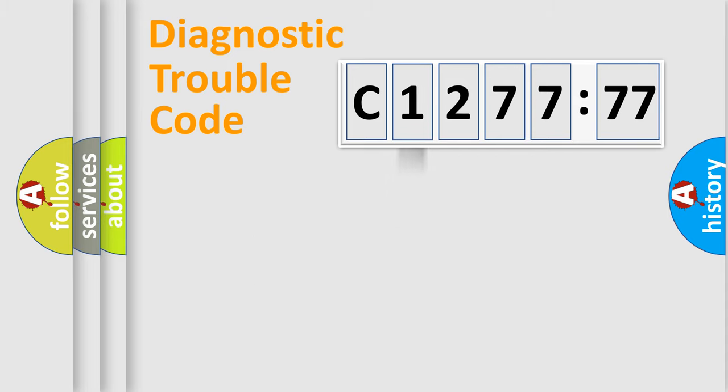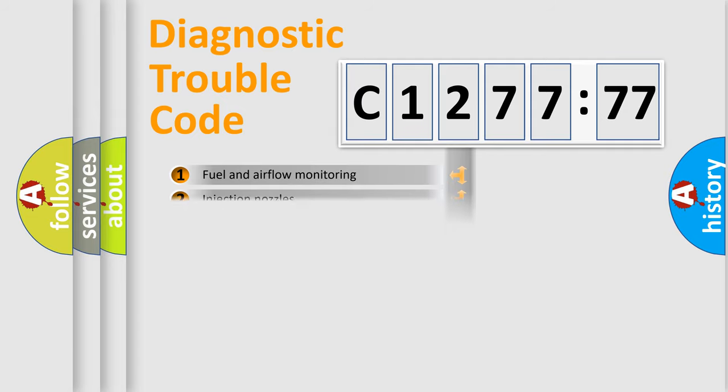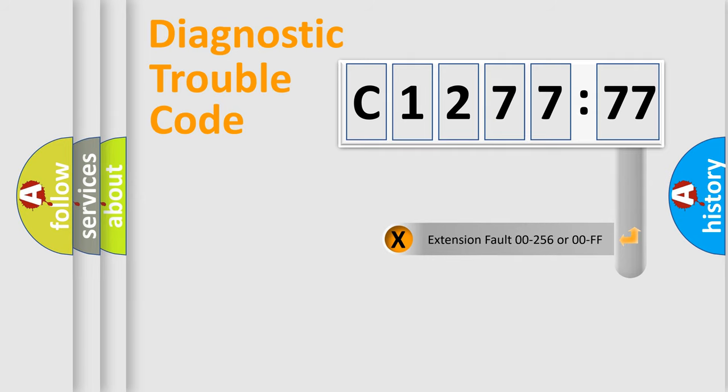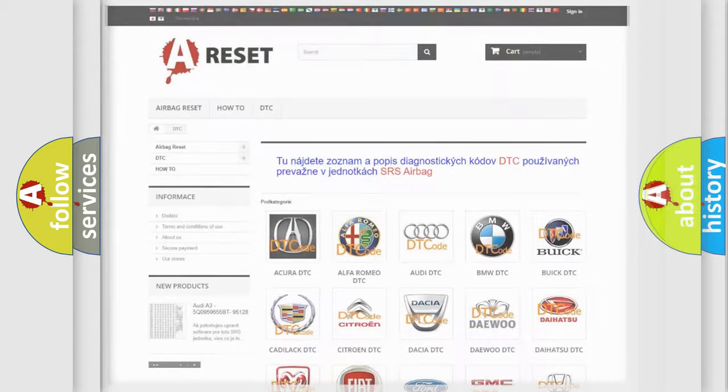If the second character is expressed as zero, it is a standardized error. In the case of numbers 1, 2, 3, it is a car-specific error. The third character specifies a subset of errors. The distribution shown is valid only for the standardized DTC code. Only the last two characters define the specific fault of the group. The add-on to the error code serves to specify the status in more detail, for example, a short to ground. Let's not forget that such a division is valid only if the second character code is expressed by the number zero.